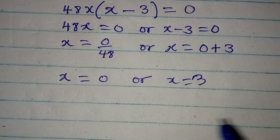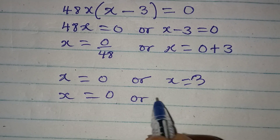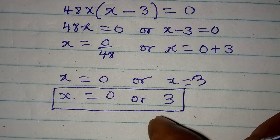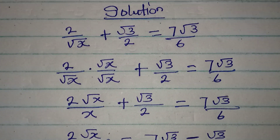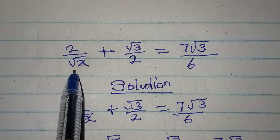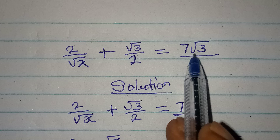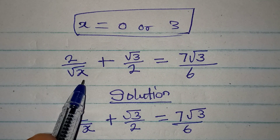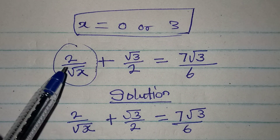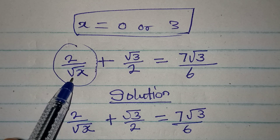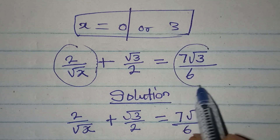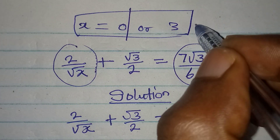Bringing the two solutions together: x equals zero or x equals three. But both must be checked. Looking at the original equation — 2 over root x plus root 3 over 2 equals 7 root 3 over 6 — if we put x equals zero, this becomes undefined because you cannot divide 2 by zero. So zero does not satisfy the equation. If we put in x equals three, the equation is satisfied. Therefore, x equals three.